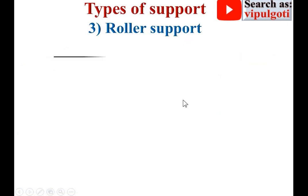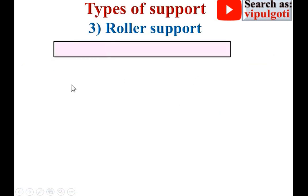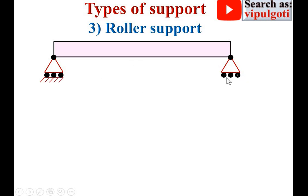Third one — roller support. This is the beam supported at the two ends, similar to the hinge support up to a point, but for roller support, rollers are provided below the supports. Similarly, rollers are provided at both ends. For example, these are the A and B ends of the beam.